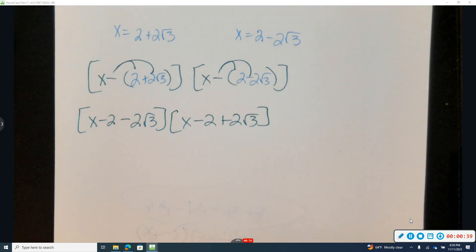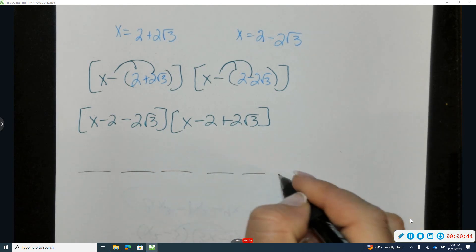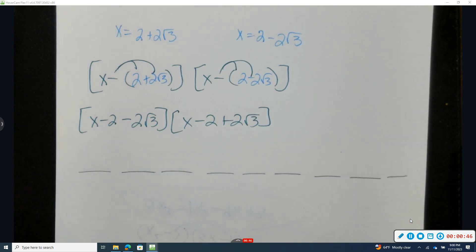And then I'm going to distribute. Each time I distribute this x, I'll have three different terms. So I'm looking for nine different terms before I combine like terms.